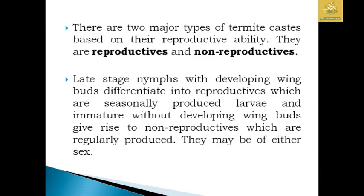Based on reproductive ability, they are classified into reproductives and non-reproductives. Late-stage nymphs with developing wing buds differentiate into reproductives, which are seasonally produced. Larvae and immature individuals without developing wing buds give rise to non-reproductives, which are regularly produced. These may be formed from either sex.